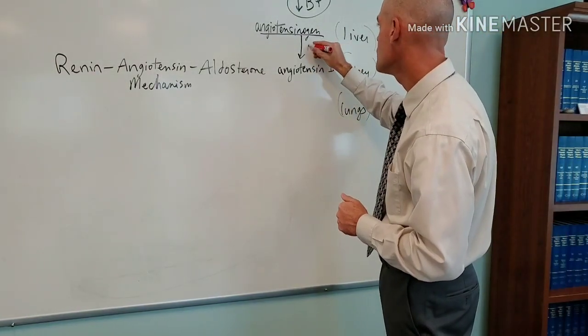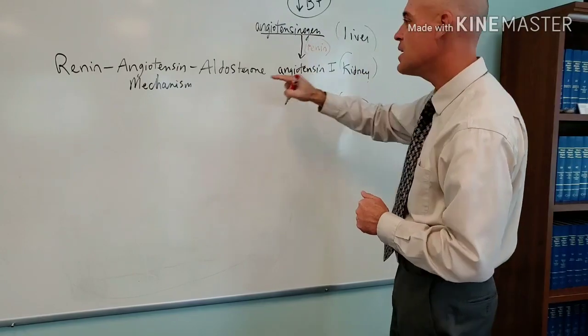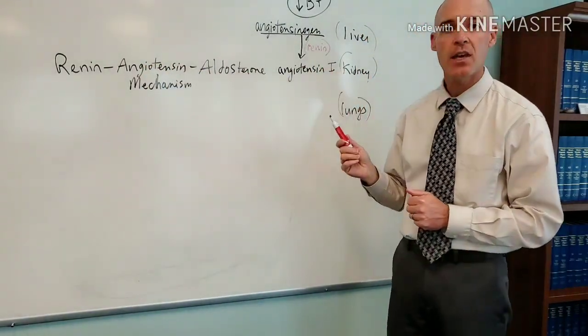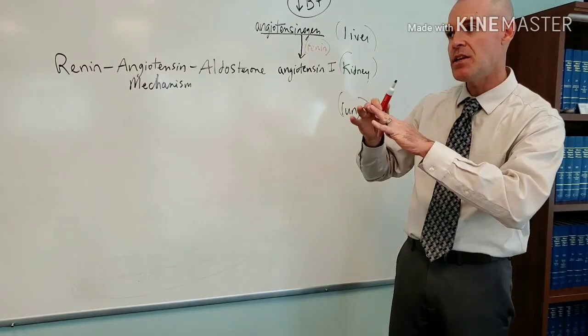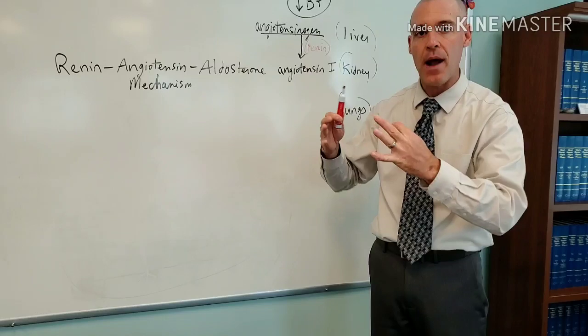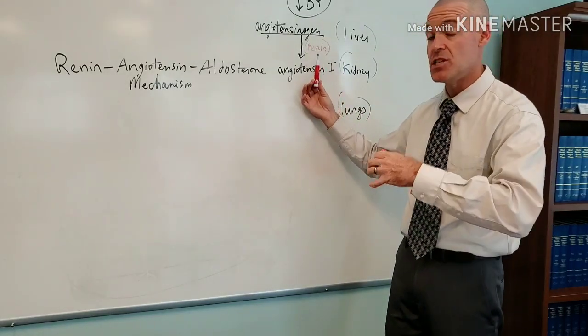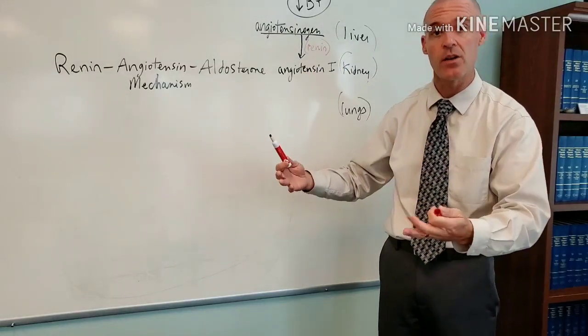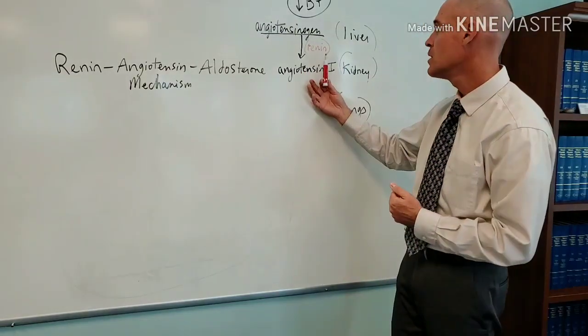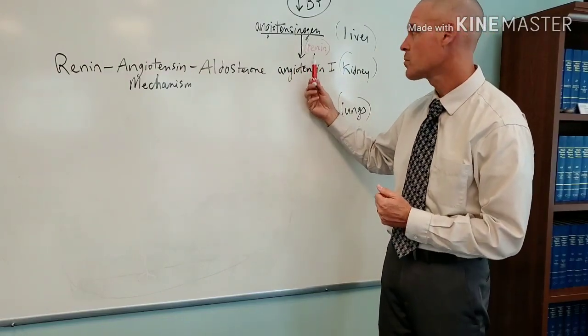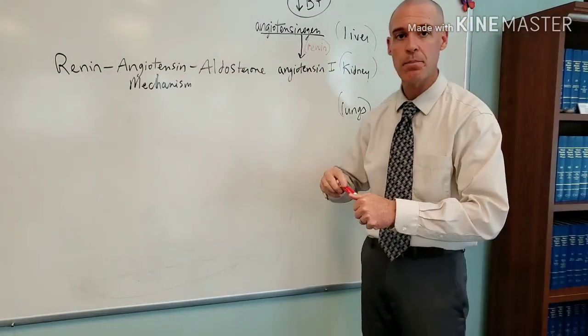So renin is not a hormone. It is an enzyme produced in the kidney. It's in a part of the kidney that's involved in autoregulation called the JG apparatus. It's actually produced by the JG cells of the JG apparatus, the juxtaglomerular apparatus. So that's the specialized cells that produce renin that allows this conversion to take place.